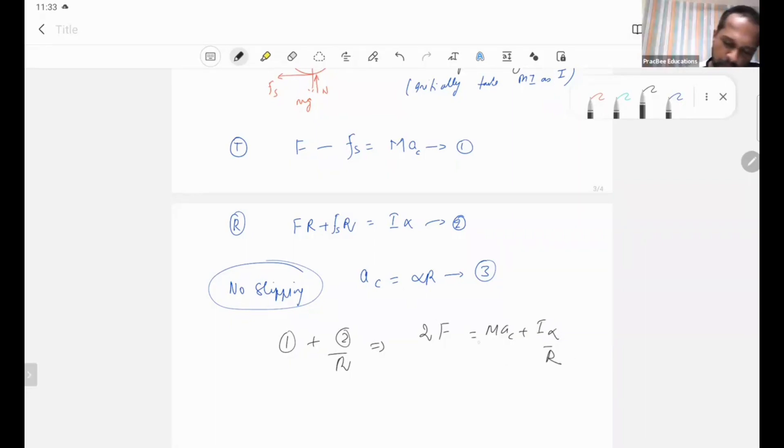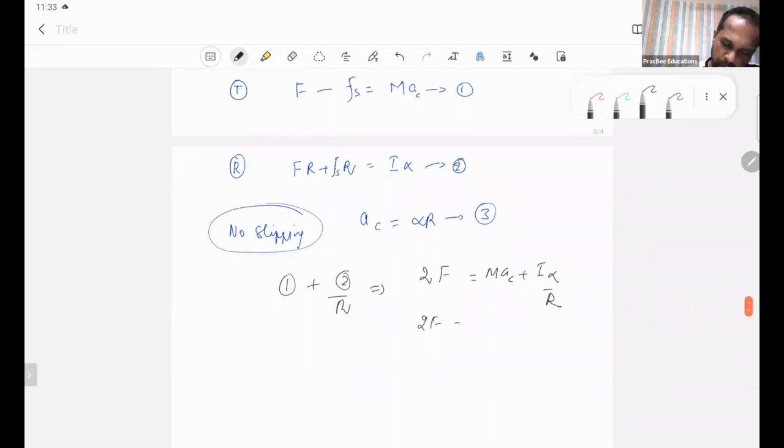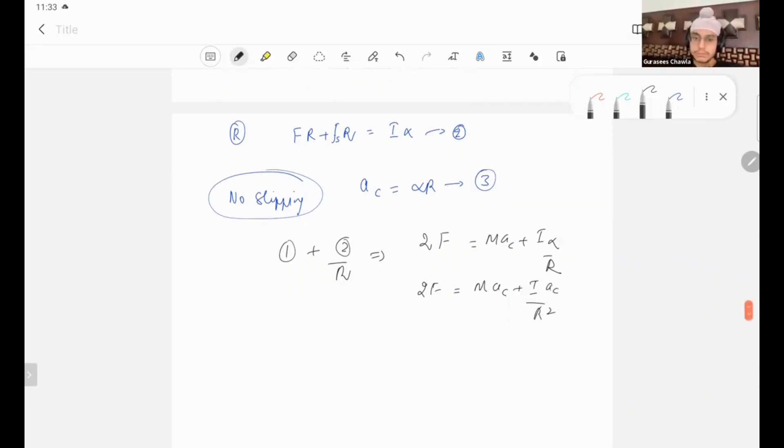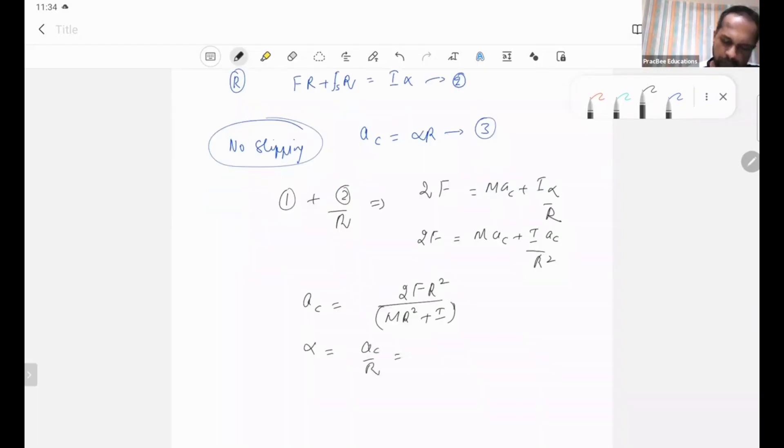Now we can substitute Ac equals alpha R. So alpha equals 2FR divided by I plus MR squared.